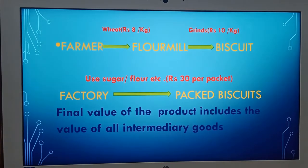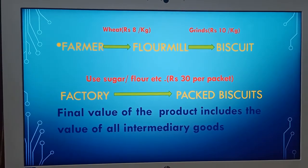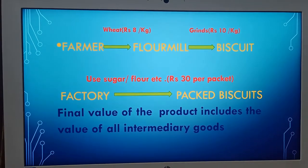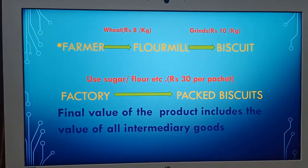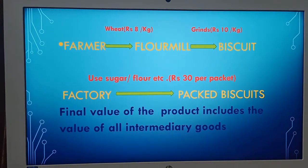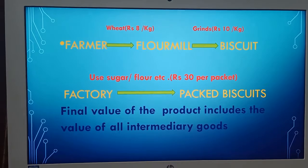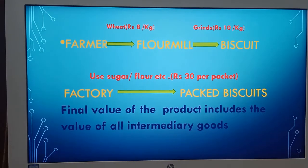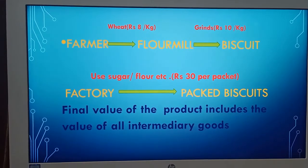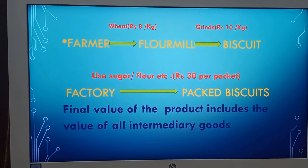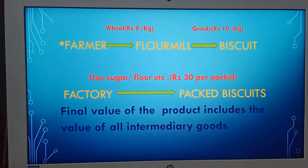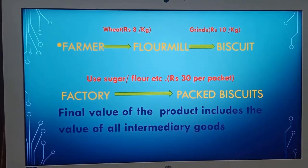The biscuit factory uses the flour, sugar, etc. to make biscuits and finally provides these packed biscuits at the rate of Rs. 30 per packet. This means wheat is added as an ingredient in all the four steps.